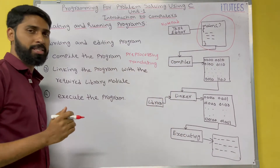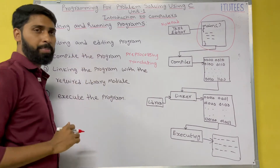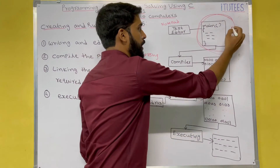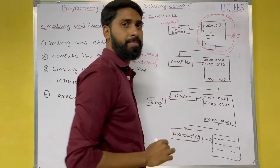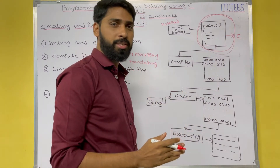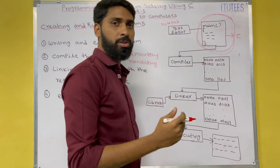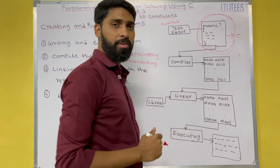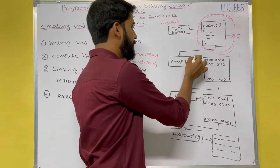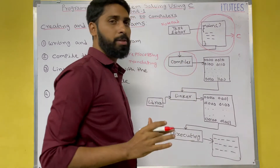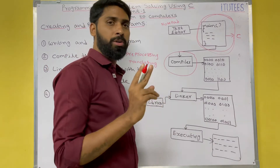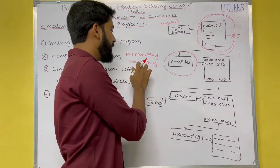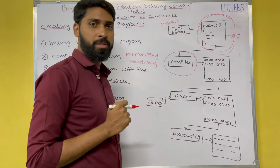After that, the second step is to compile the program. You are writing this program in C language, but the system does not understand C language. So you need to convert the C language instructions into machine language instructions — that is why we need a compiler. The compiler can do two things: one is pre-processing and the other is translating.